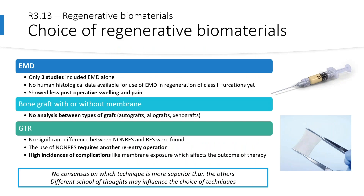Some concerns with this guideline: for EMD, only three studies utilized it alone, and there are still no human histological data available for use in class 2 buccal furcations; however, it was reported to result in less postoperative swelling and pain. For bone graft with or without membranes, there is no analysis between types of graft — autograft, allograft, or xenograft. For GTR, there is no significant difference between non-resorbable and resorbable membranes, but non-resorbable membranes require another re-entry operation, and a high incidence of membrane exposure affects therapy outcomes. There is currently no consensus on which technique is superior. In our school, we usually use EMD with or without bone graft in regenerative procedures.